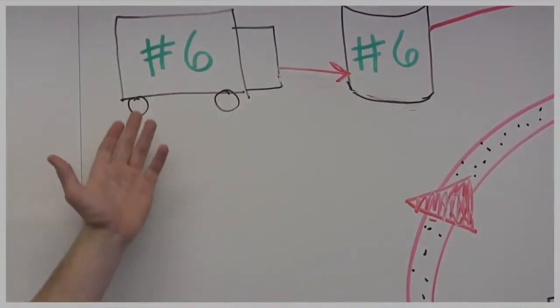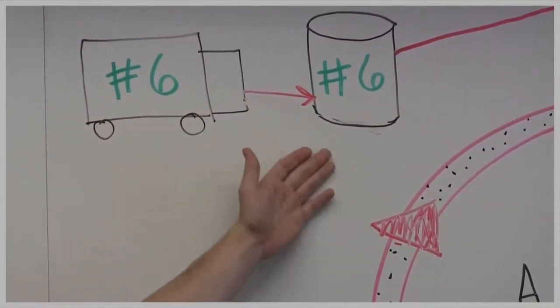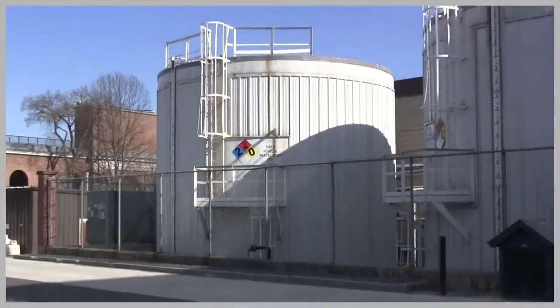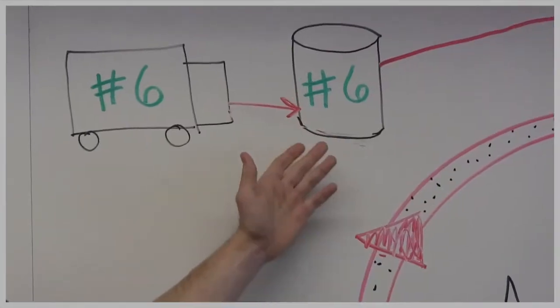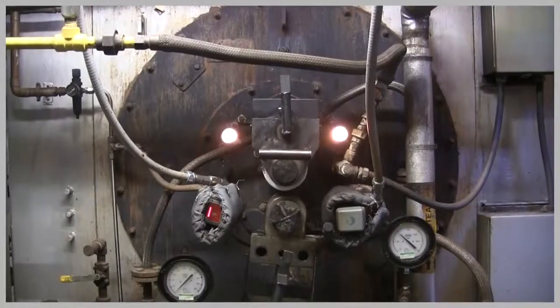Initially in the process, trucks bring in number six fuel oil, which is stored in tanks behind the Dartmouth Power Plant. This fuel is then transported to the boilers, where it's burned and heats up water, which turns into steam.